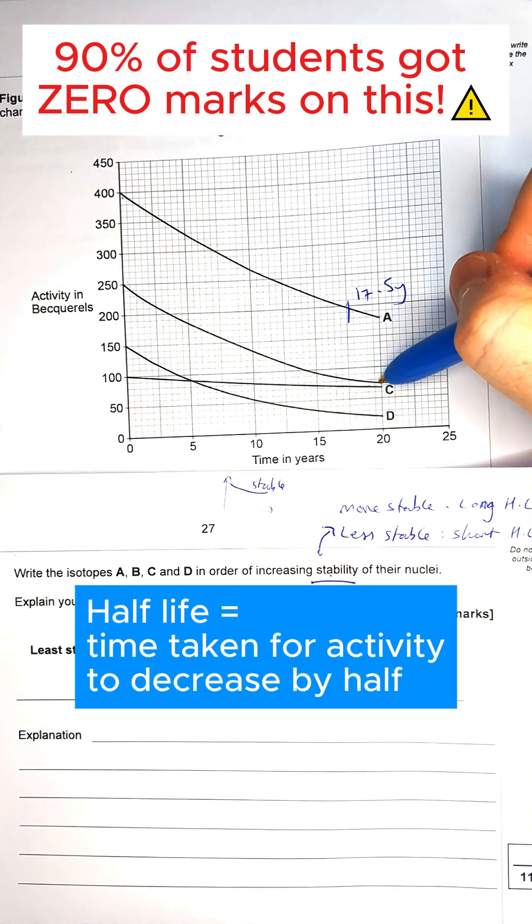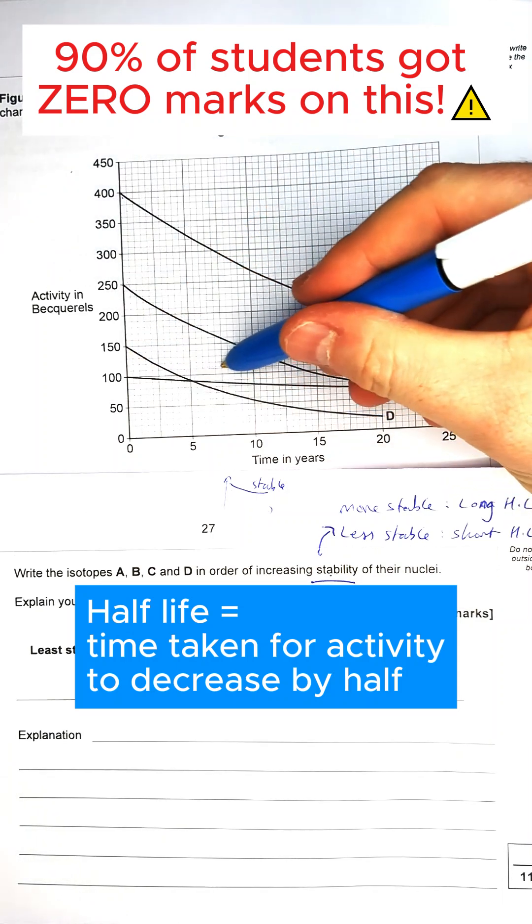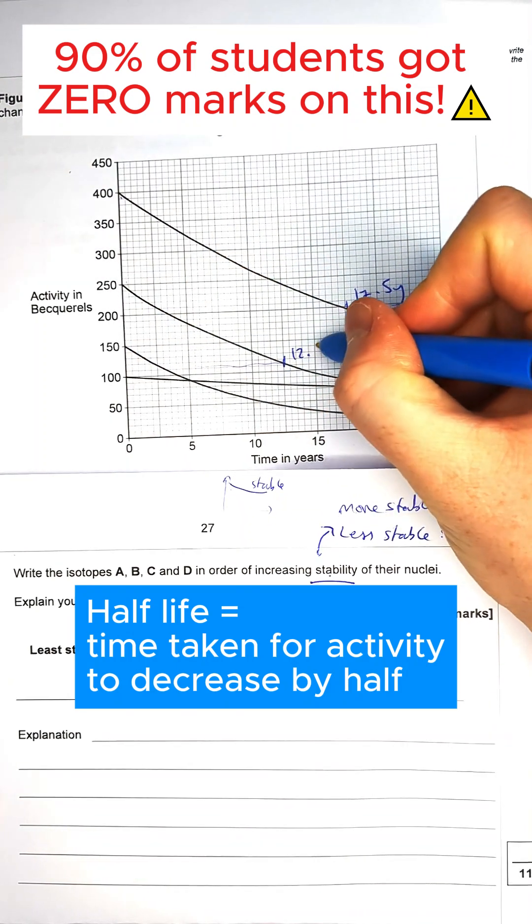We've got B, 250, that's going to go down to 125, so that's going to take up to about here. It's going to be about 12.5 years.